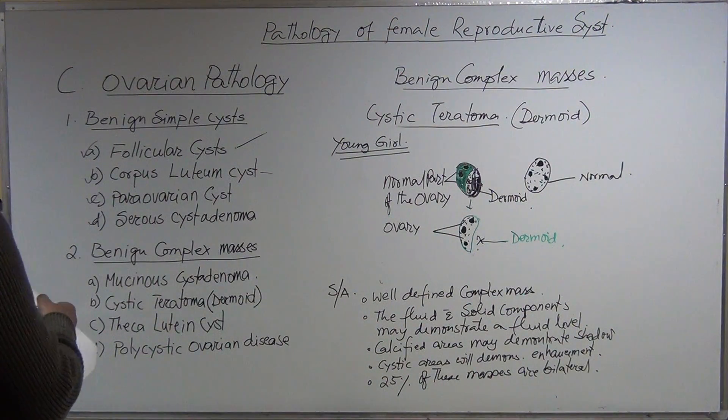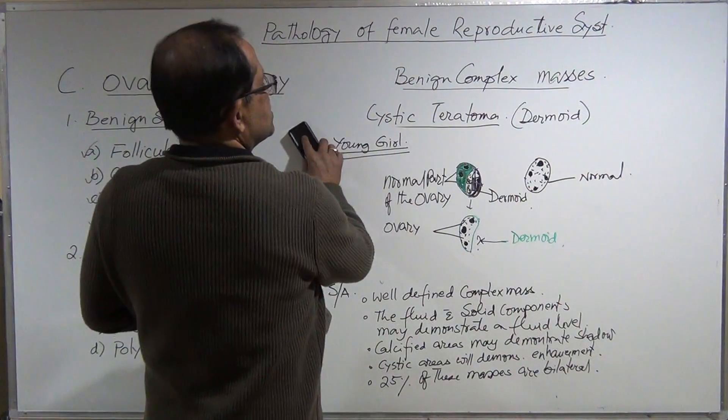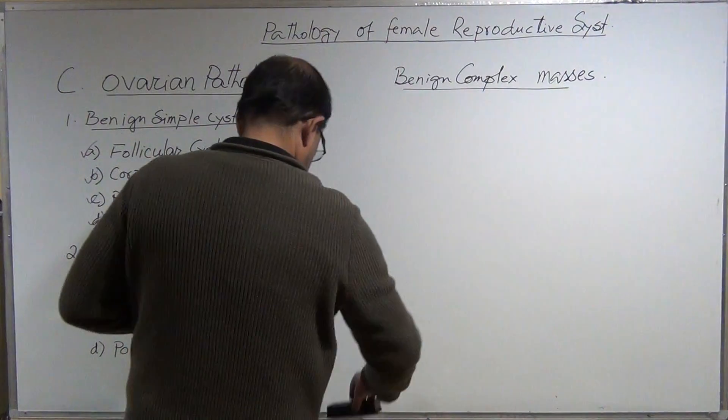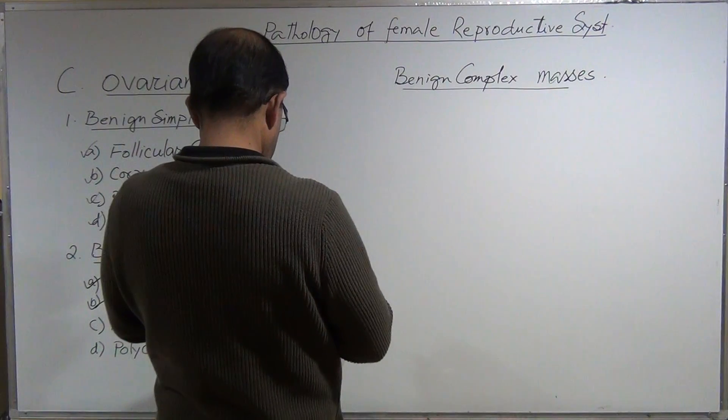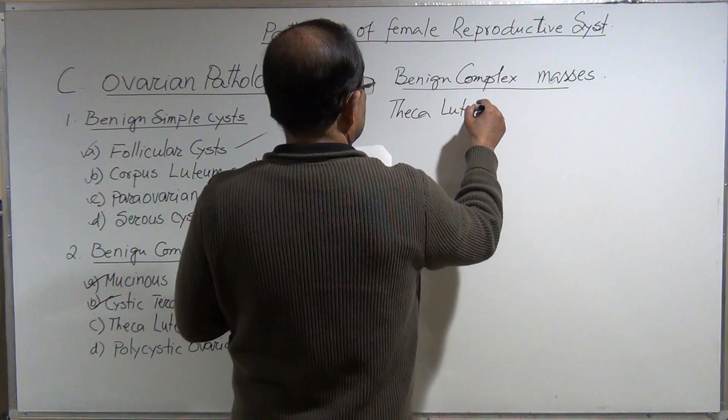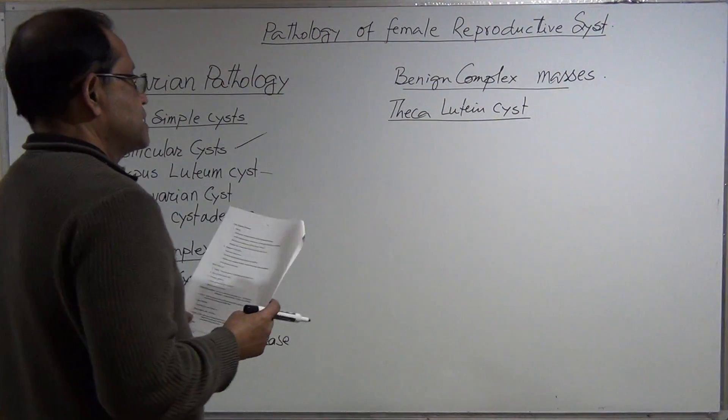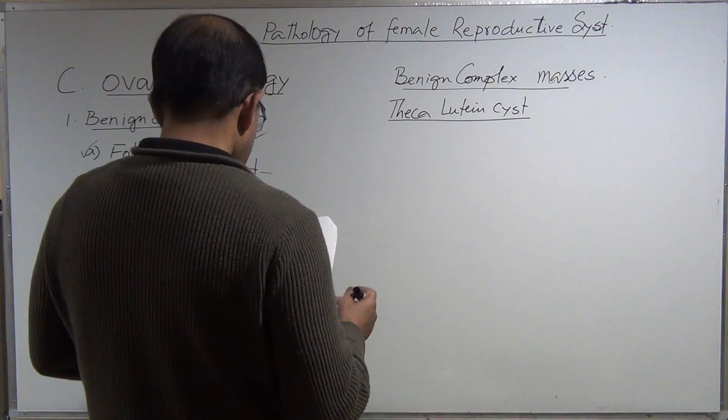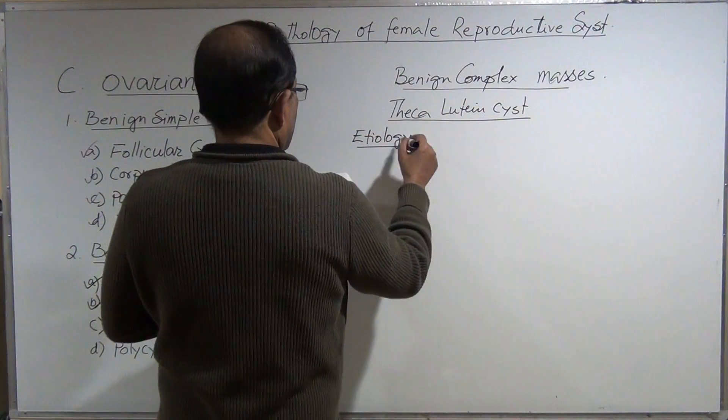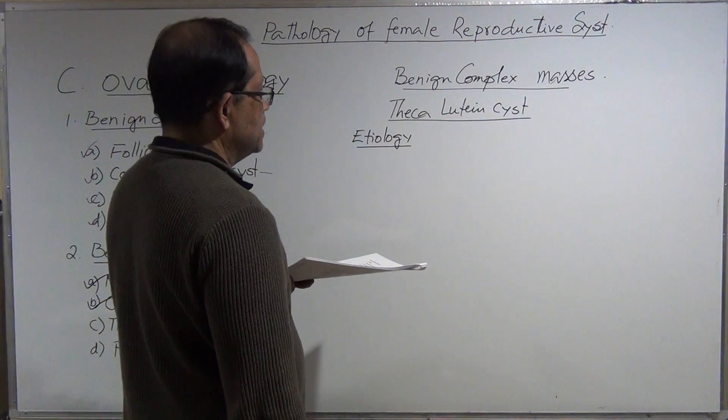So that is very important. Now I will go over the theca lutein cyst. Theca lutein cyst—it is in the ovary. There is a theca cell in the ovary.